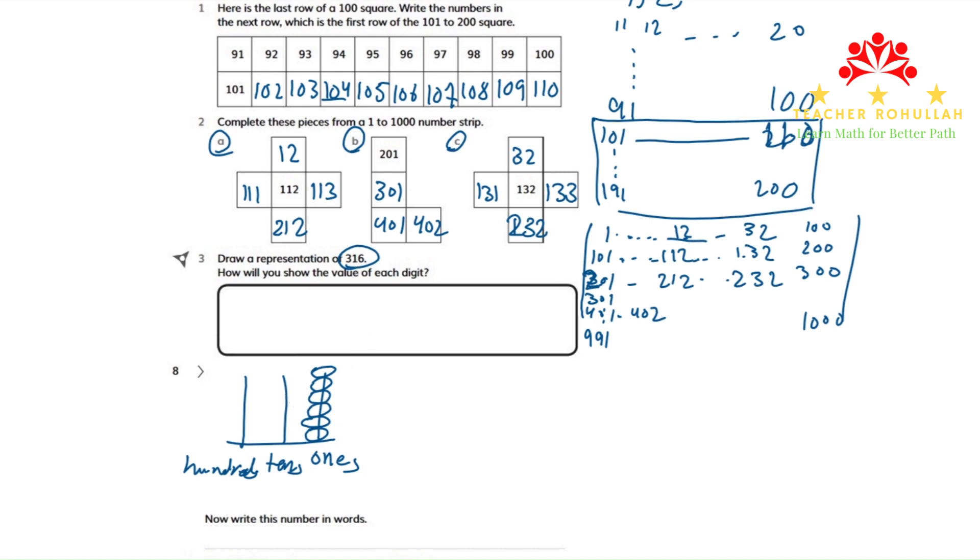What number do we have in the tens place? We have one. So we have to draw one bead over here. In the hundreds place, we have three. So we can draw three beads over here, which shows 316.